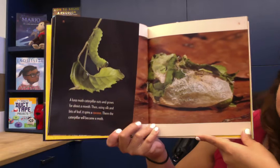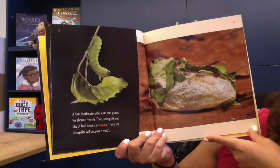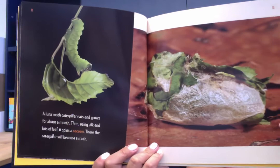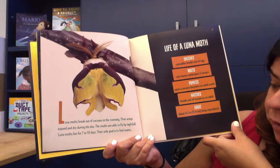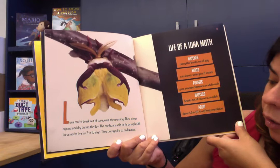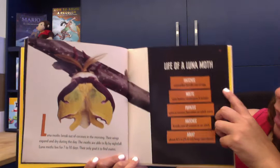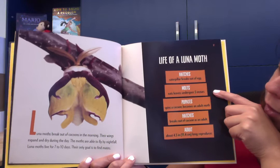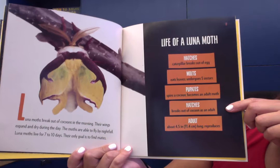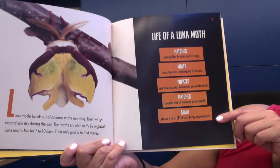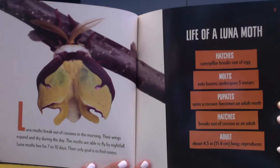A Luna Moth caterpillar eats and grows for about a month. Then, using silken bits of leaf, it spins a cocoon, where the caterpillar will become a moth. Luna Moths break out of cocoons in the morning. Their wings expand and dry during the day, and they are able to fly by nightfall. Luna Moths live for seven to ten days, and their only goal is to find mates. Life of a Luna Moth: hatches as a caterpillar from an egg, molts and eats leaves through five instars, pupates by spinning a cocoon, becomes an adult moth about 4.5 inches long, then reproduces.